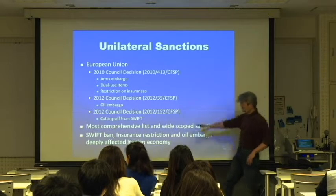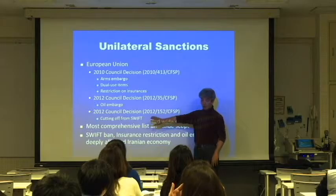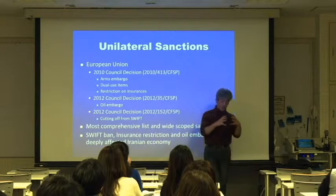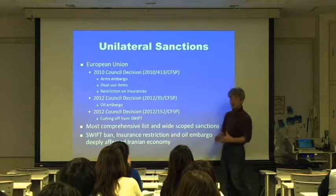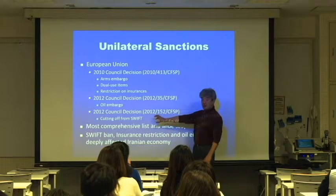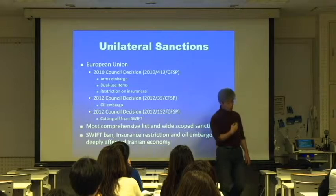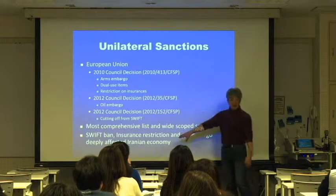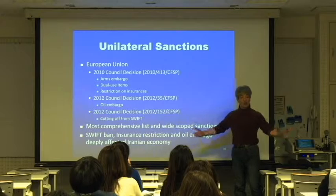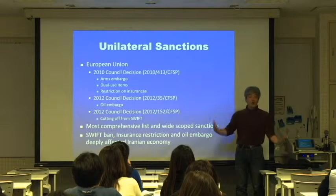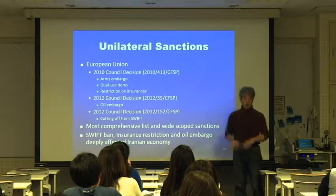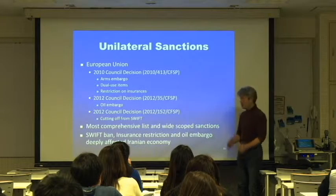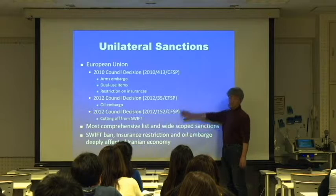The European Union put sanctions on SWIFT because it is based in Brussels, Belgium — within EU legal jurisdiction. SWIFT ban, insurance restrictions, and oil embargo deeply affected the Iranian economy. Although Iran is an oil-producing country exporting oil, it didn't get the money. There was therefore a very, very tough economic situation since 2012.